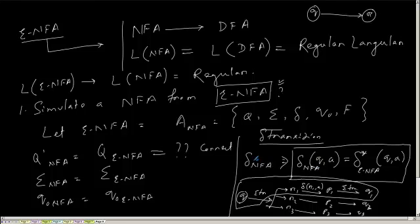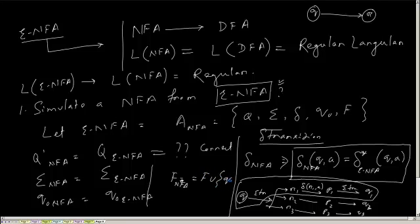The integrated NFA has a transition function delta_NFA which is equal to the extended transition function of the epsilon NFA. The final state F of the NFA equals F_NFA union the starting state Q0. This is because if we have to accept an empty string, meaning no input symbol is present, then the epsilon-NFA must account for that.